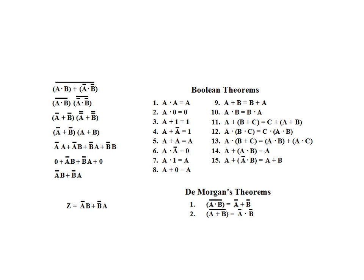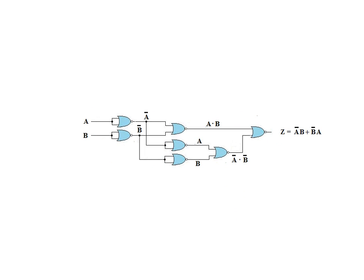To review, here is the solution expression and the reduced outputs for the various stages of the array. As shown by this example, complex gate arrays can be greatly simplified through the use of Boolean and DeMorgan theorems.